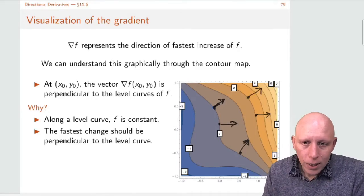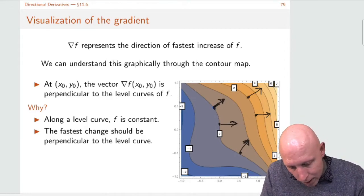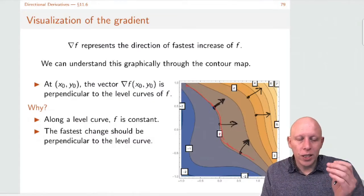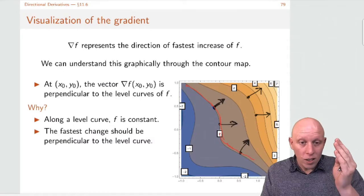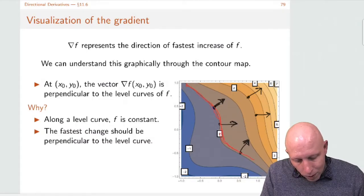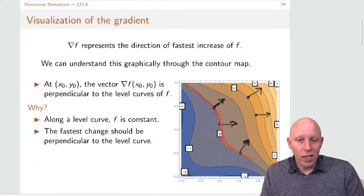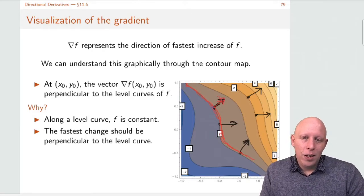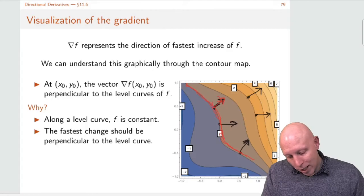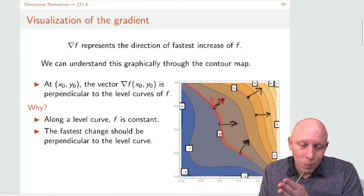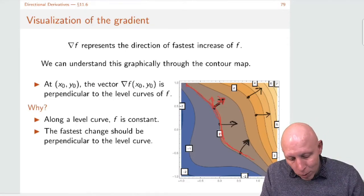So why does that work? The reason is: what is it to have a contour line? It's saying that the function is constant on that line — in this example, the function value equals zero along this line. So if you're going to increase as fast as possible, you need to be going completely perpendicular to this contour line. If you had any direction that wasn't perpendicular, you'd have some component going in the constant direction. You can always go faster by going perpendicular.